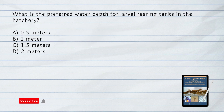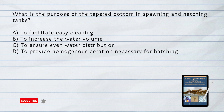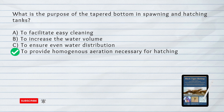What is the preferred water depth for larval rearing tanks in the hatchery? What is the purpose of the tapered bottom in spawning and hatching tanks? D. To provide homogenous aeration necessary for hatching. The tapered bottom in spawning and hatching tanks allows for even and homogenous aeration, which is crucial for successful hatching.